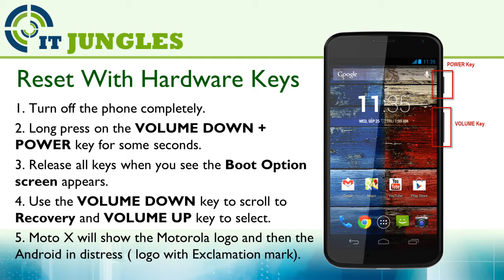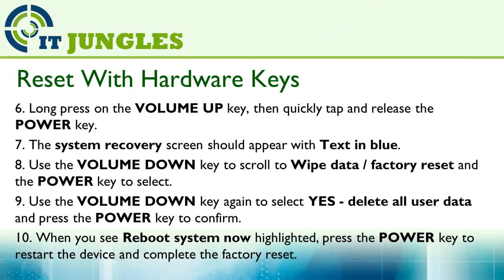The Moto X will show the Motorola logo and then the Android in distress logo with the exclamation mark. Now long press on the volume up key, then quickly tap and release the power key. The system recovery screen should appear with the text in blue. Use the volume down key to scroll down to wipe data or factory reset, and use the power key to make the selection.